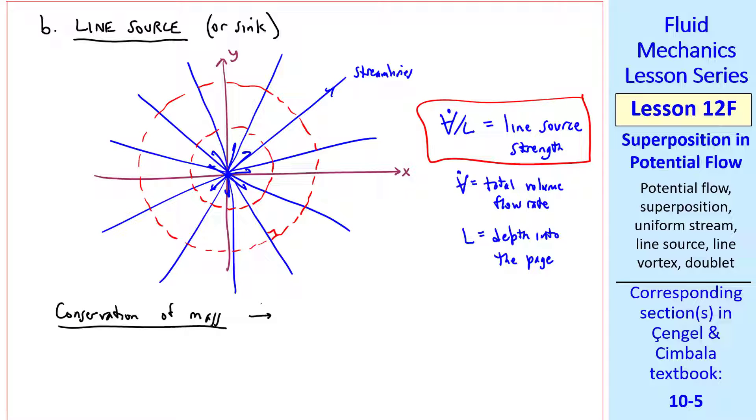From conservation of mass, we can show that ur has to be v dot over L over 2 pi r. This ensures that the same mass flow crosses any circle, and there's no tangential flow. So this is our velocity field, now in cylindrical coordinates. Note that there's a singularity point at the origin, but as long as we stay away from that singularity, this line source is still a useful building block.